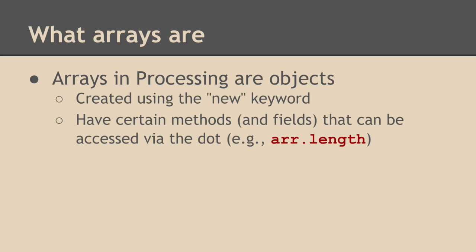And there are also certain methods and fields that can be accessed via the dot in an object reference. So if arr is a reference referring to an array, then arr.length is a field that we can access directly that tells us how many elements are in that particular array.